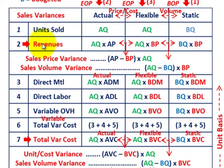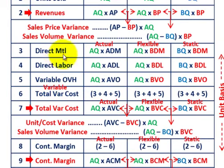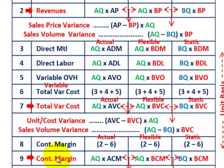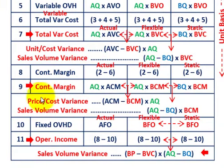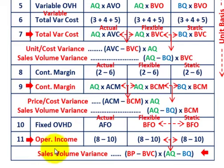The first thing we're going to have to determine is our revenues. Based on our revenues, we're going to have some sales price and volume variances. Then we determine our total variable cost — that would be direct materials, direct labor, and variable overhead — and from that we get unit cost variances and sales volume variances. Then we determine our contribution margin, which is the difference between revenues and total variable cost, giving us price and cost variances and sales volume variances. Finally, we move down to fixed overhead amounts. Once we know fixed overhead and contribution margin, we can determine operating income and from that our sales volume variance.